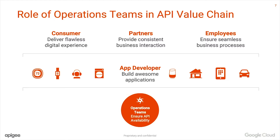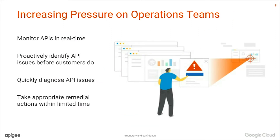The ops team has a big task — they are responsible for ensuring that the underlying APIs are available and responsive. What do ops teams really care about? They want to be able to monitor APIs in real time. Once they're monitoring, if there are any issues, they want to be proactive — identify issues even before customers do so they can react. And once they've identified issues, they need tools to quickly diagnose and mitigate those from happening in the future.